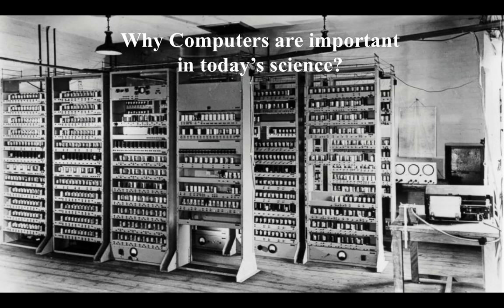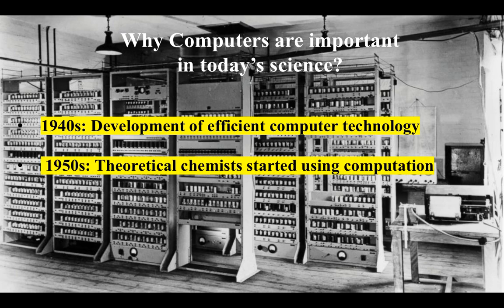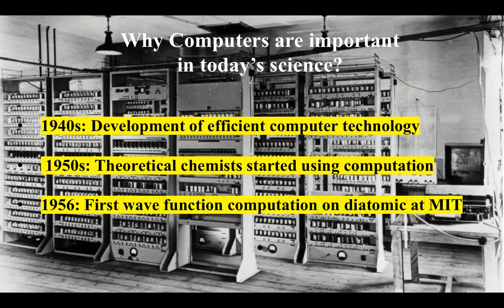Now the first question is: why are computers important in modern science? With the development of efficient computer technologies in the 40s, solutions of wave equations for atomic systems began to be a practical objective. In fact, in the early 50s, theoretical chemists became extensive users of early digital computers, and the first wave function calculations on diatomic molecules were performed in 1956 at MIT.